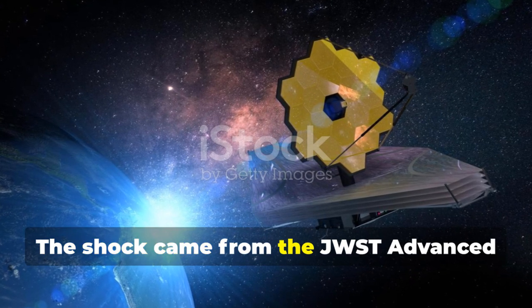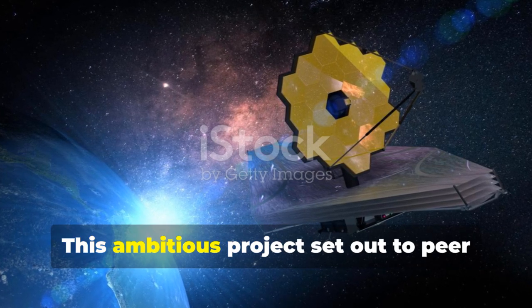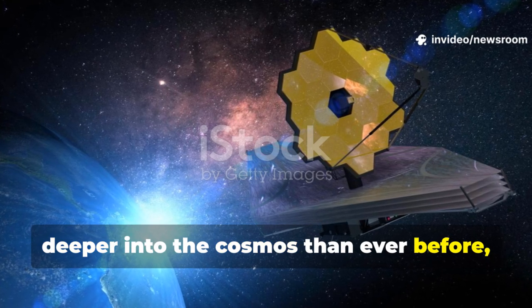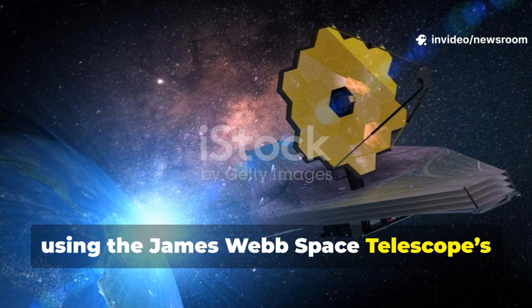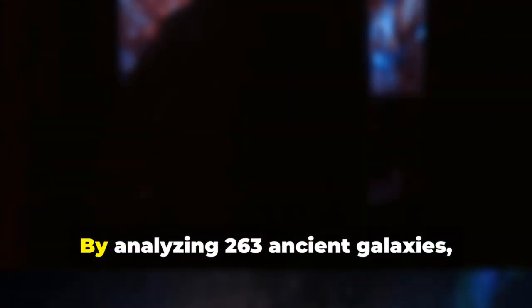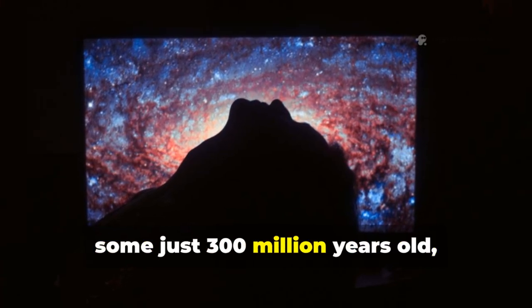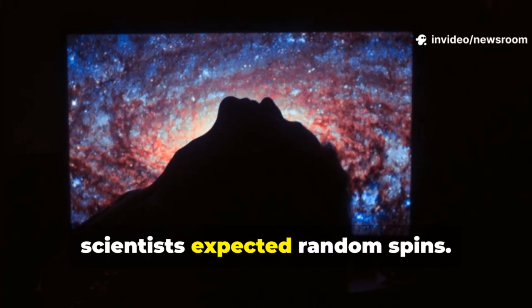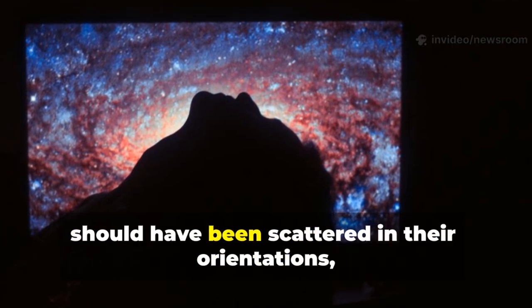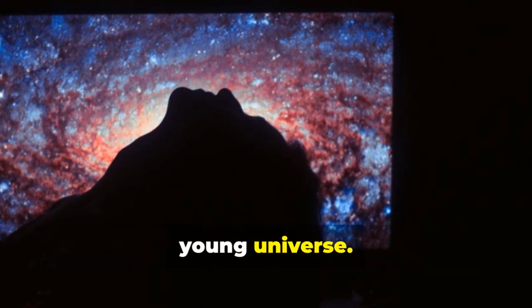The shock came from the JWST Advanced Deep Extragalactic Survey, or JADES. This ambitious project set out to peer deeper into the cosmos than ever before, using the James Webb Space Telescope's powerful infrared eyes to capture the faintest glimmers of ancient galaxies. By analyzing 263 ancient galaxies some just 300 million years old, scientists expected random spins. These galaxies, among the earliest ever observed, should have been scattered in their orientations, reflecting the chaotic conditions of the young universe.